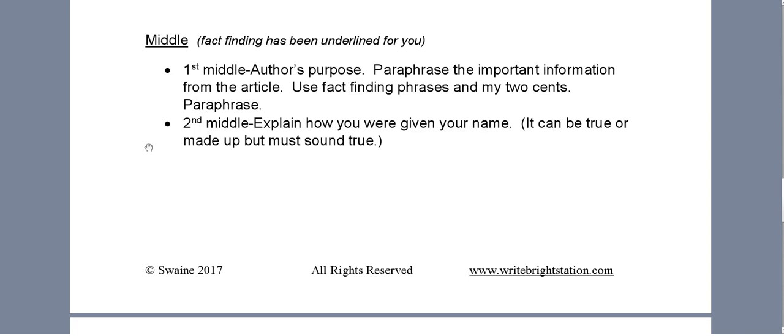Now you're going to skip a line and indent and you're going to have a second middle paragraph. In this paragraph, you're going to explain how you were given your name. You may have to do this for homework. You may have to go home and talk to your parents about how you were given your name. You may have to make it up. If you can't find out, maybe you don't have parents anymore and you're just not sure, you can make it up.